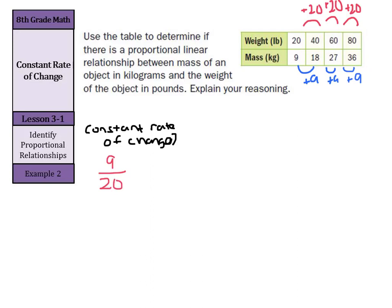Now we need to look to see if our numbers are proportional. And the way we're going to do this now is to go, okay, my mass in the first one was 9 over 20. I am going to then write the next one 18 over 40 and the next one 27 over 60 and the last one 36 over 80.